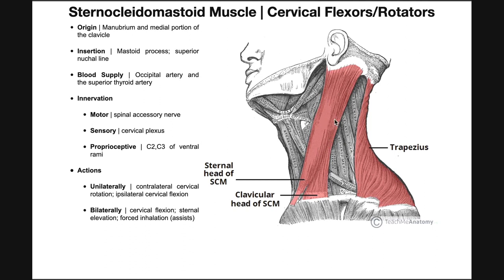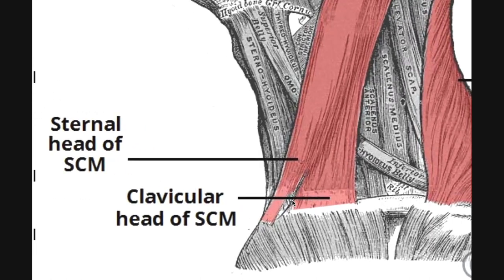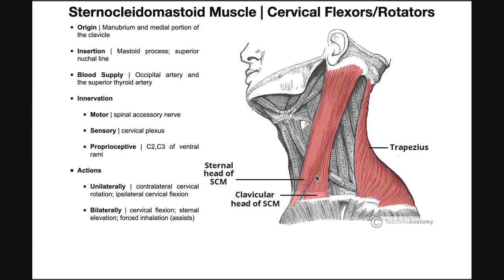Here is the sternocleidomastoid muscle. If we look at the superior attachment up here, we see that it's really just one attachment. But if we go inferiorly to this attachment down here, we can actually see two clear distinct heads. Inferiorly, there are two heads of the sternocleidomastoid: the sternal head, which is more medial, and the clavicular head, which is more lateral. We can see there's a small space between those two heads — two distinct heads, which really leads us to the origin of the muscle.